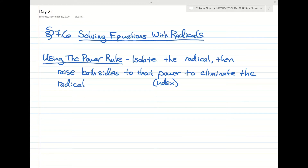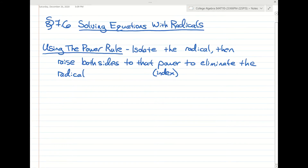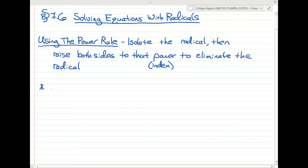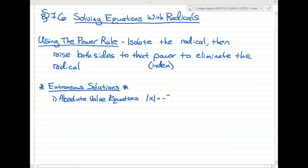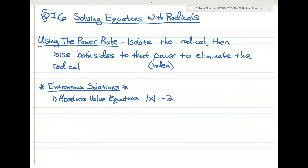I have about three or four examples to go over, but first I want to mention extraneous solutions. An extraneous solution means you did the algebra correctly, but the answers don't actually work. This happens with absolute value equations — for example, if you get an answer where the absolute value of x equals negative two, that's impossible. So you always have to check absolute value equations for extraneous solutions.